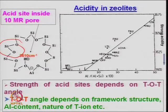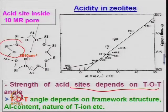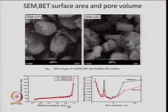The strength of acid site depends on T-O-T angle — silicon, oxygen, aluminum — and in what way they have been oriented towards a crystal plane. The TOT angle depends on the framework structure, aluminum content, and nature of the T ion. If some third component like boron or gallium is added, there will be a change or shift in acidity.